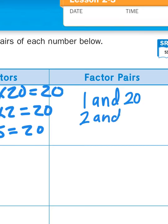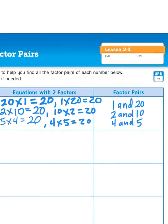So 1 and 20, 2 and 10, 4 and 5. And that's how I came up with those factor pairs.